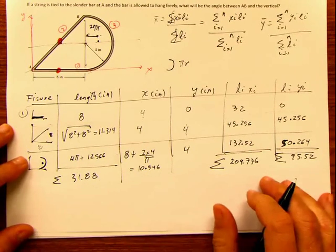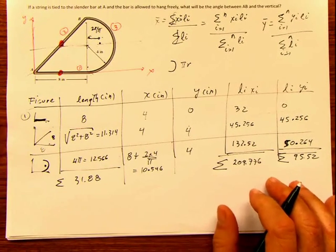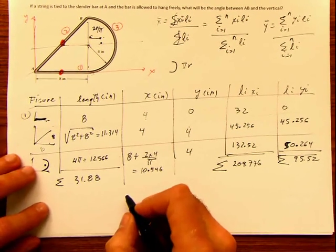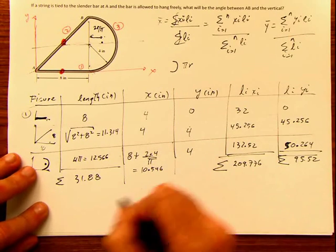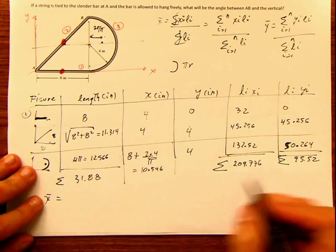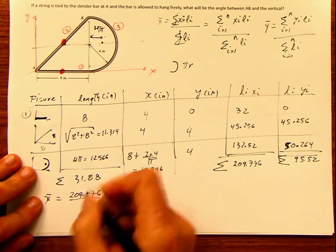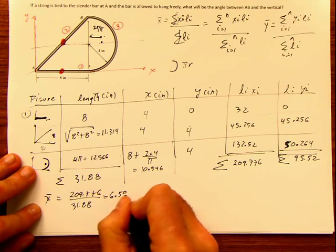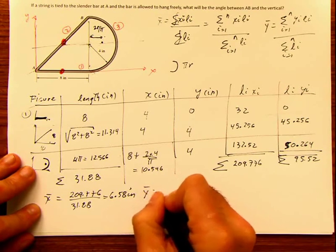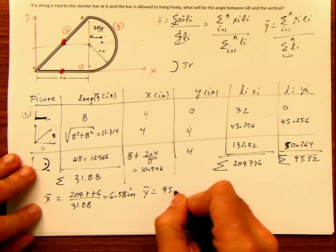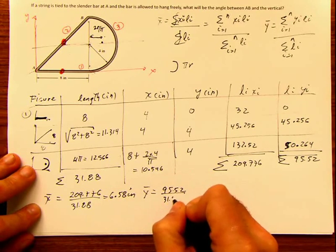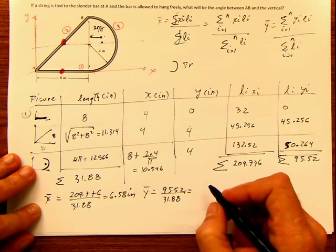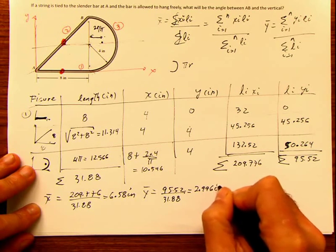With these values, we can calculate x-bar and y-bar. X-bar is 209.776 divided by 31.88, which equals 6.58 inches. And y-bar is 95.52 divided by 31.88, which equals 2.996 inches.